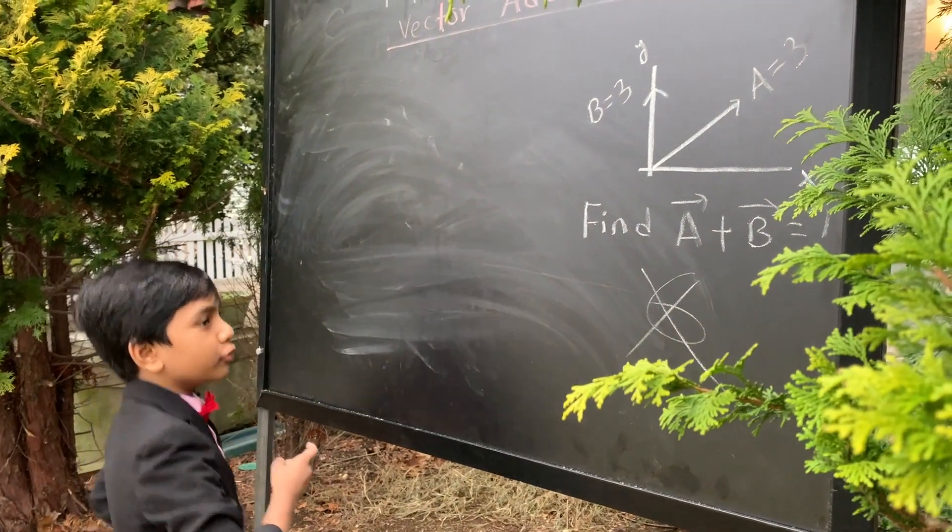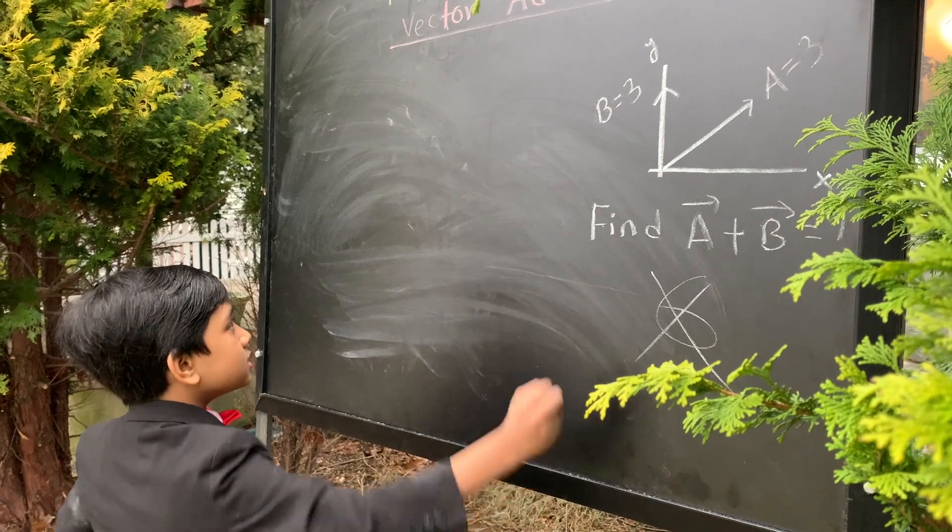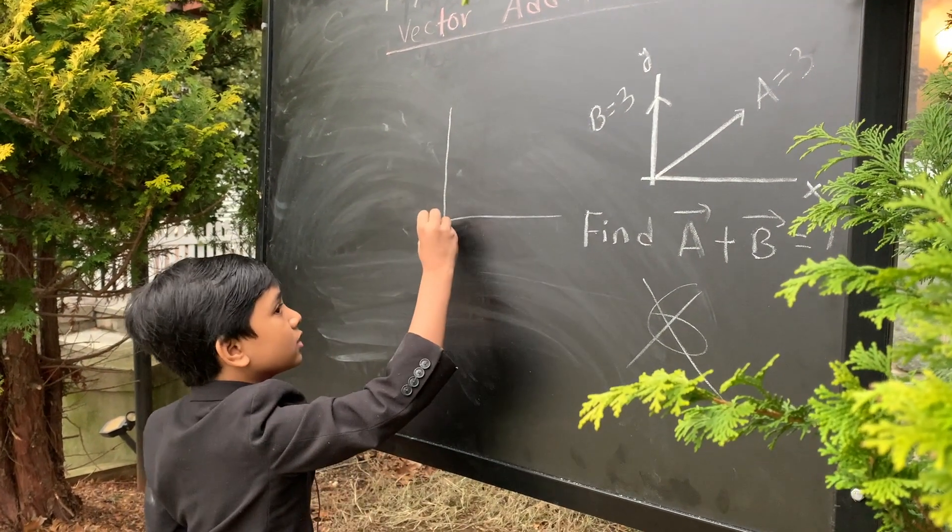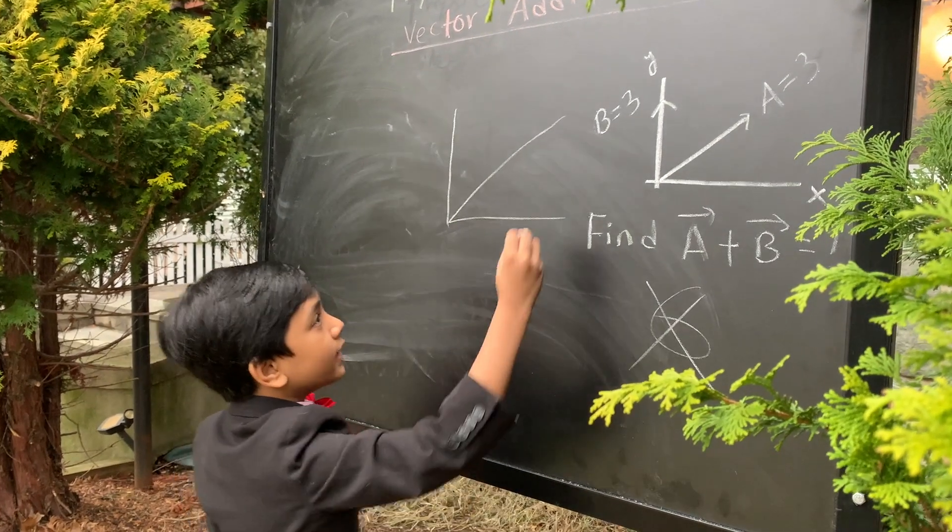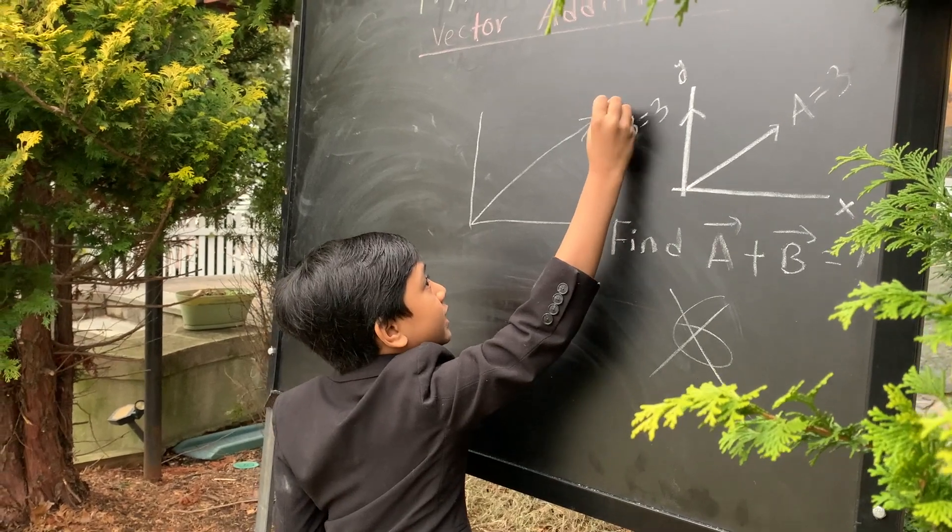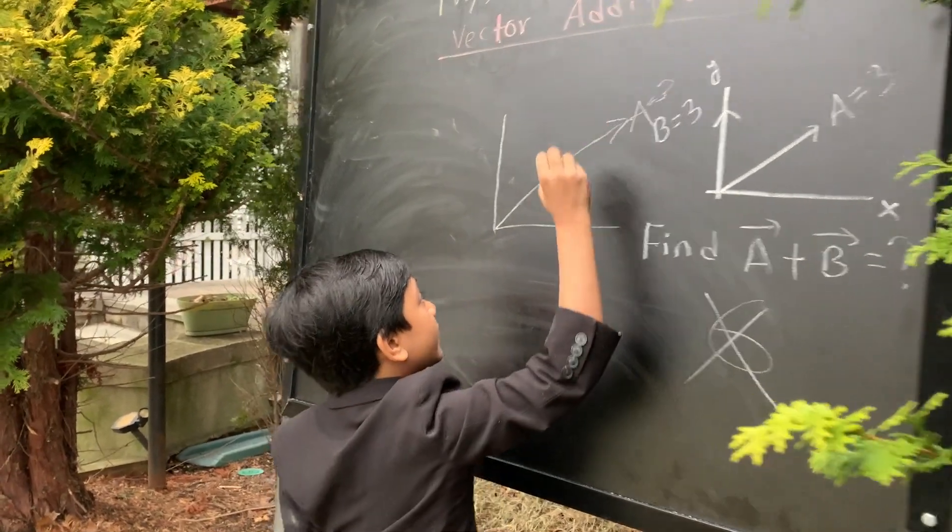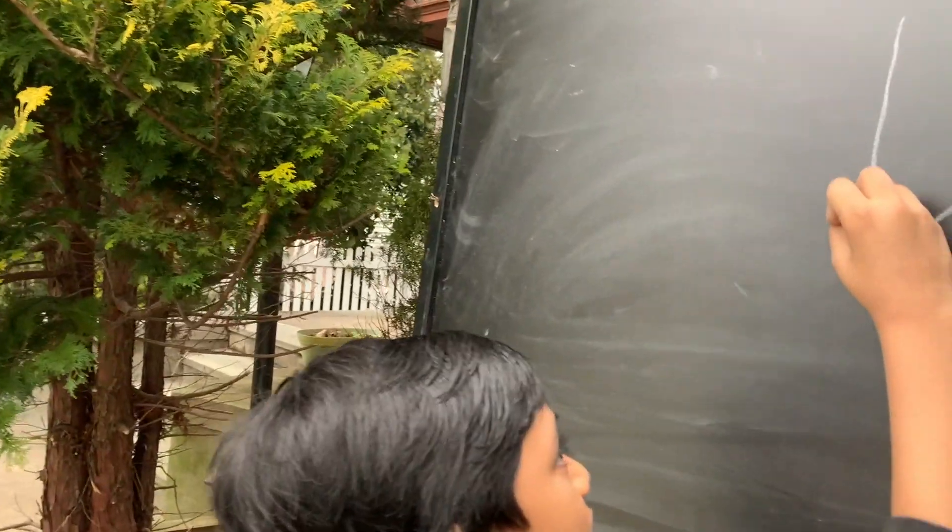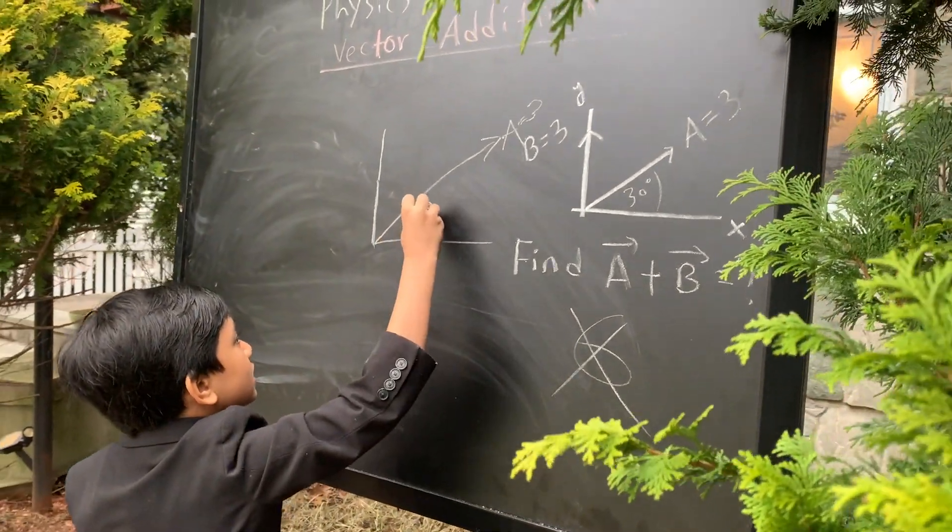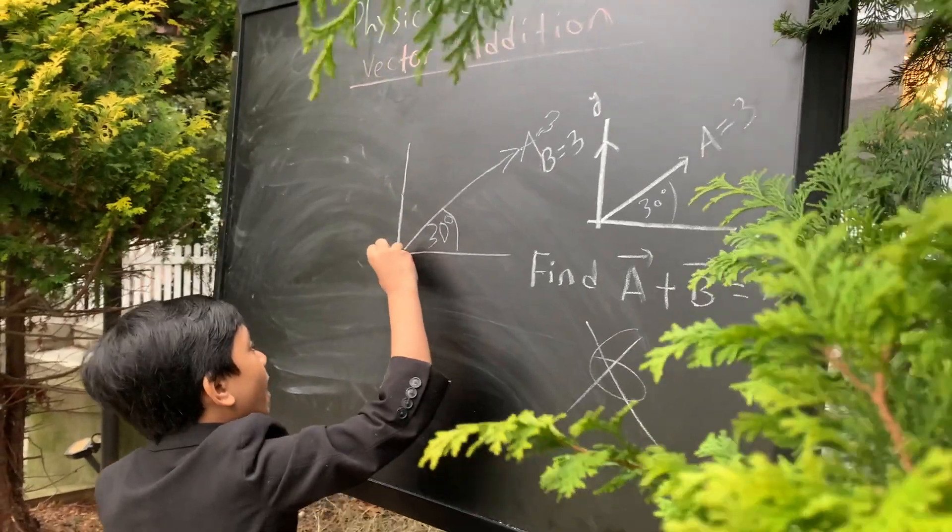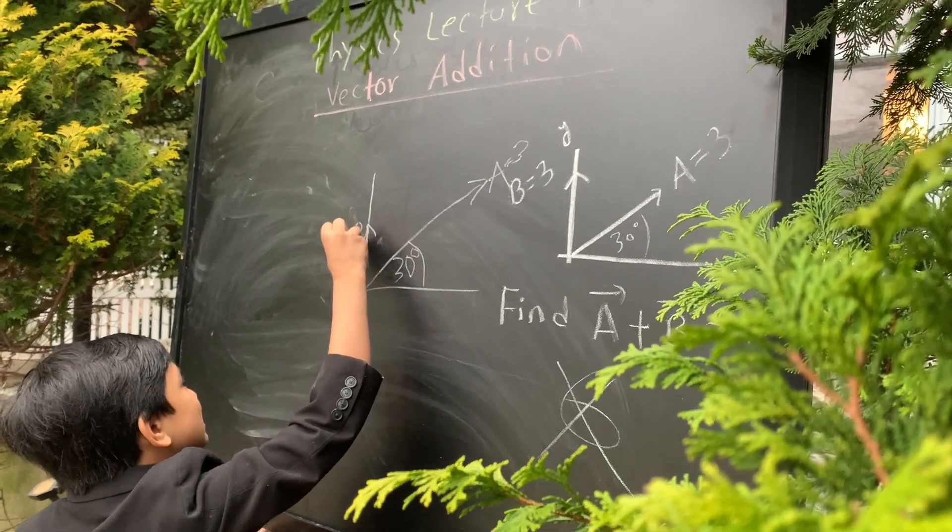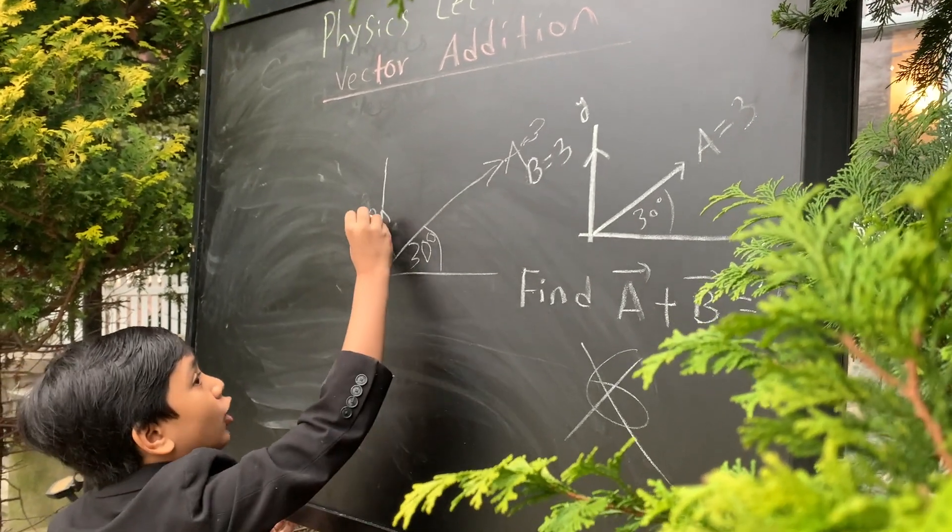Let me show you what actually happens. So, first let's reconstruct this graph. This is A, which is 3, and this is B, it's sort of tall. Oh yeah, and this is also 30 degrees. That's a given. So, this is B, and it's also 3.